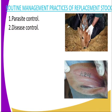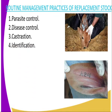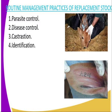Then we have disease control — you are supposed to control diseases as far as the replacement stock is concerned. Then we have castration, which is the deprivation of the male reproductive power. It is done using various methods: you can use a Burdizzo, whereby you crush the sperm duct, and also you can use a rubber ring and elastrator method.